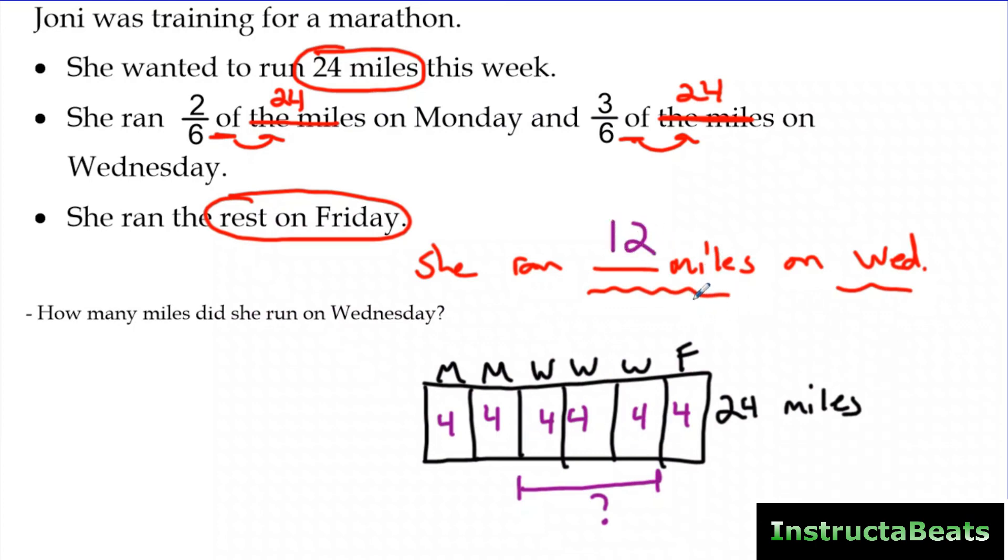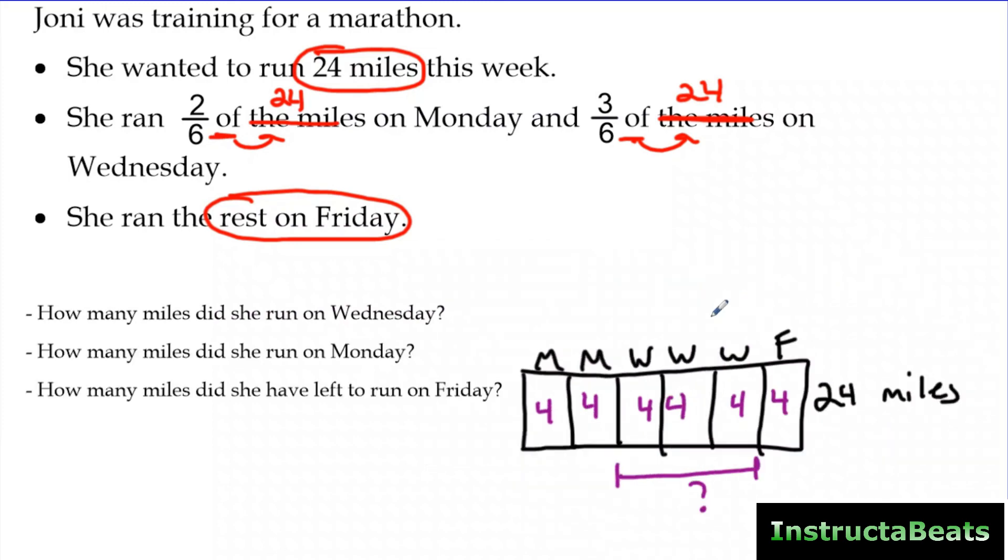So she ran 12 miles on Wednesday. The other two questions I might ask you is how many miles did she run on Monday? And of course, we're going to use the same tape diagram, but our question mark would be underneath these two. So the answer for that would be eight miles on Monday. And then the last question they might ask you is how many miles did she have left to run on Friday? And for that one, your question mark would just go underneath one of your six, because two-sixths was Monday, three-sixths was Wednesday. That only leaves you one-sixth left over, which of course would be four miles. So again, no matter what question they're asking you using this information, you can answer all of them by drawing and labeling your visual model.